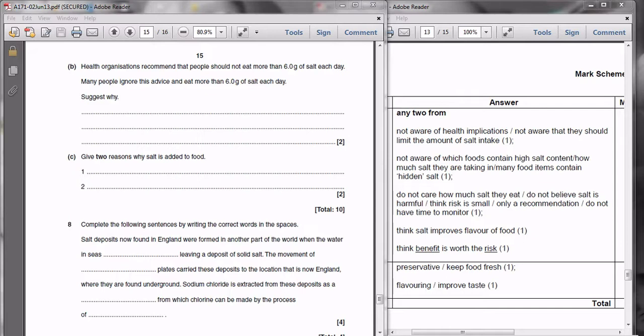Another point might be that they don't know which food contain the high amount of salt or that it's hidden in a lot of foods, particularly processed foods. You might also talk about the fact that they don't care how much salt that they eat and that they don't believe that it's actually harmful or that they think that it's just a very small risk.